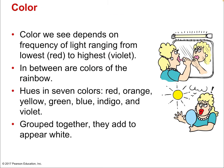Now let's talk about color. We know that the visible spectrum has all the colors of the rainbow. Color we see depends on the frequency of light, ranging from the lowest our human eyes can see — red — to the highest. In between are the colors of the rainbow: ROYGBIV — red, orange, yellow, green, blue, indigo, violet. The hues in these seven colors add up to appear white. So if you add all the colors of a light source together, you get white light. This is different from adding pigments together, which gives black.